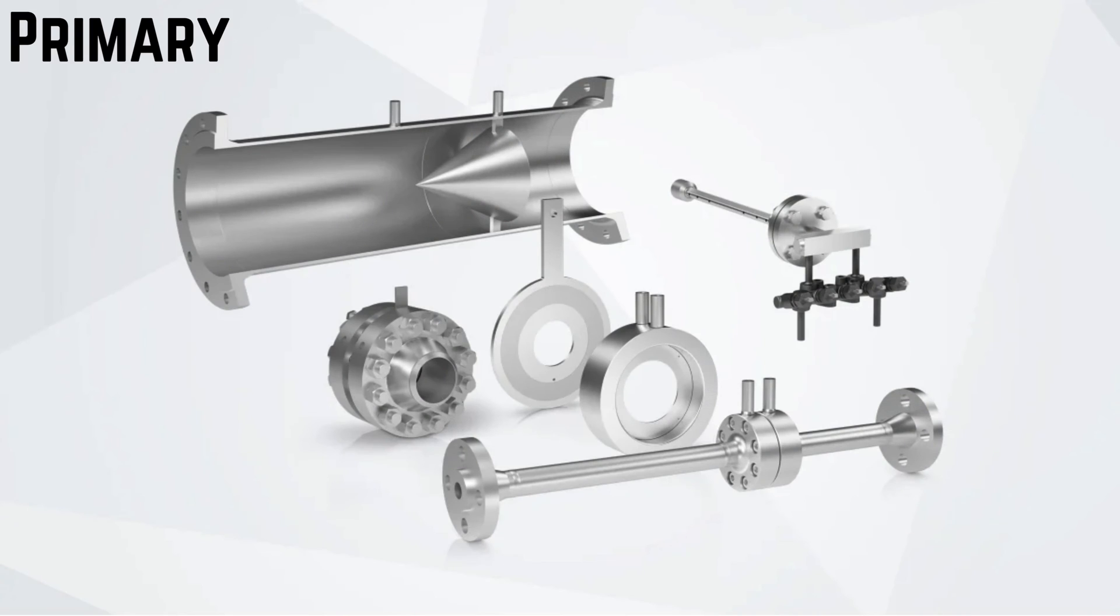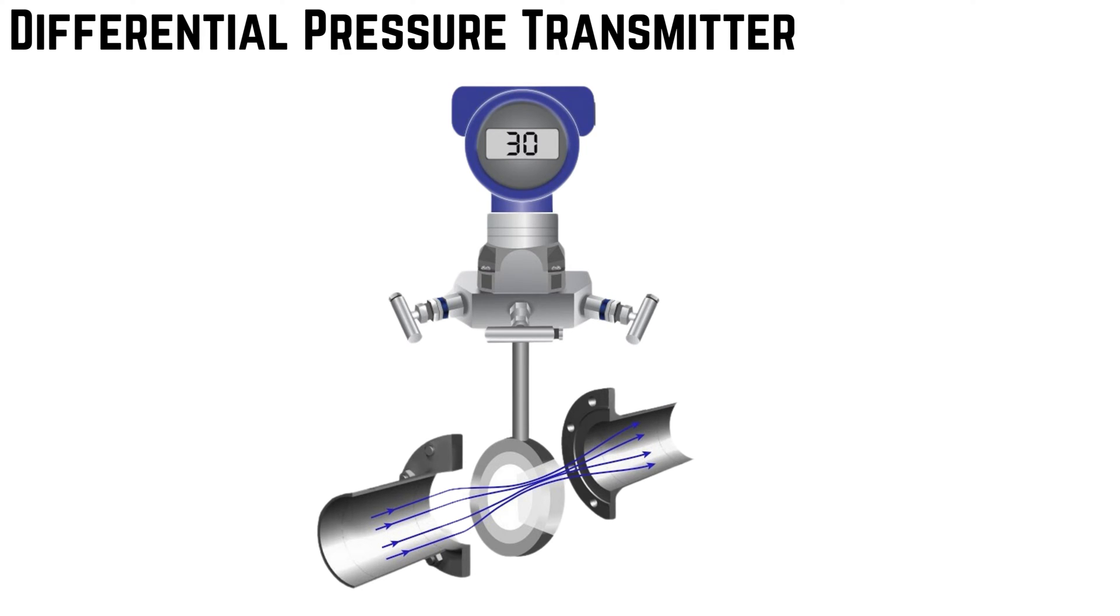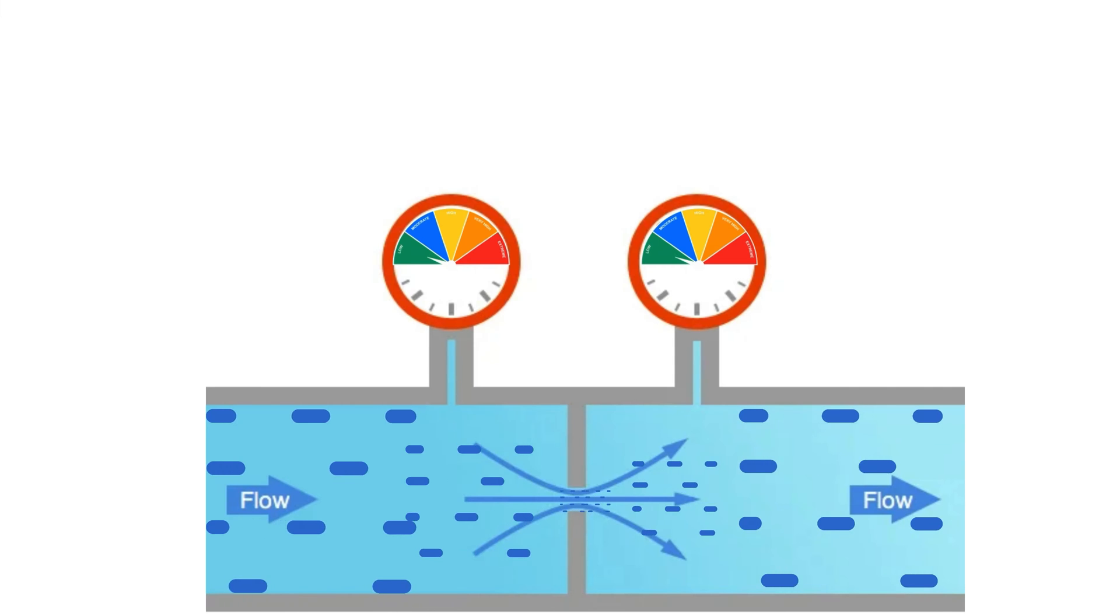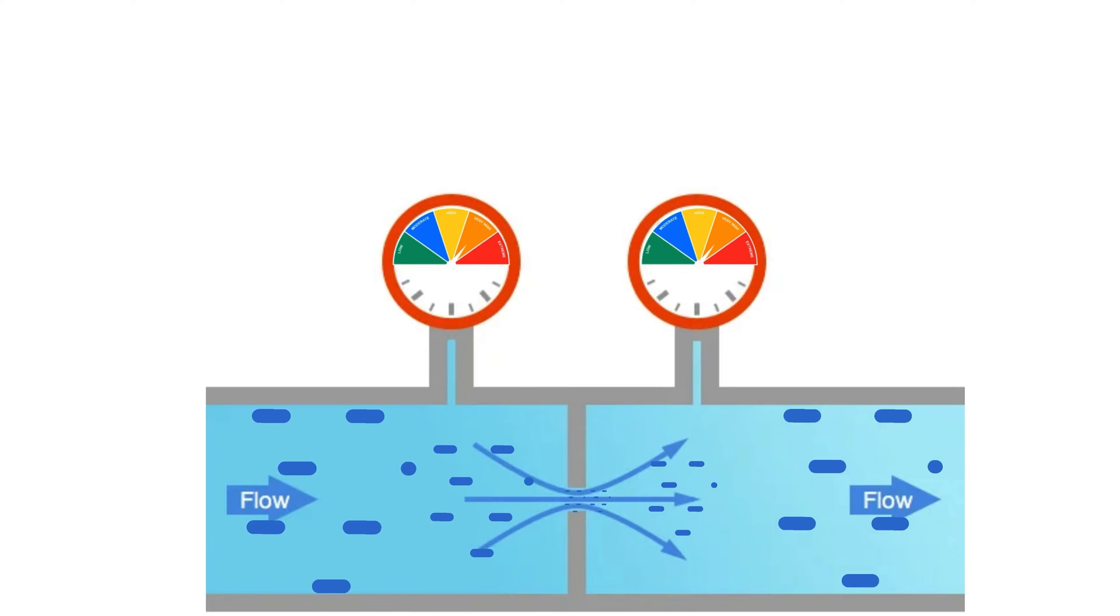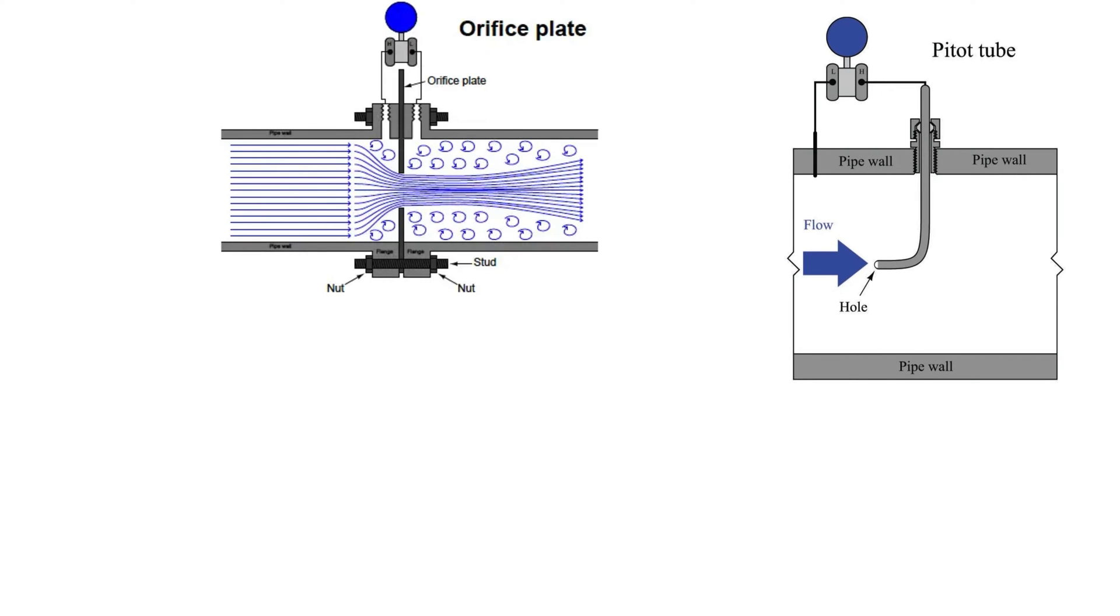This kind of flow meter consists of two parts: the primary element and the differential pressure transmitter. The DP flow meter will calculate the flow rate by measuring the differential pressure across a primary element. Various types of primary elements can be used to obtain differential pressure. Some of the most common primary elements are orifice plates, Pitot tubes, and venturi tubes.